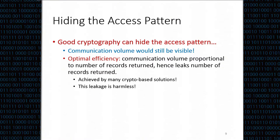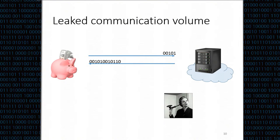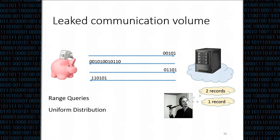This is achieved by many crypto-based solutions, and it is considered that this leakage is harmless—but is it really? The adversary can see that a query is issued; he doesn't know what the query is or if the same query is issued twice. He sees some encrypted records returned and can tell their count, but cannot tell if the same record is returned for a different query. Then another query is issued and one record is returned. This is the only information he has, along with the knowledge that these are range queries drawn from a uniform distribution.